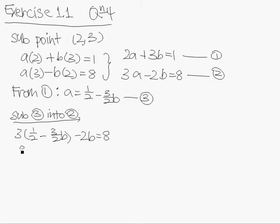Let me just expand this thing out. 3 times half is 3 over 2. So we have 3 over 2 minus 9 over 2B minus 2B equals to 8.